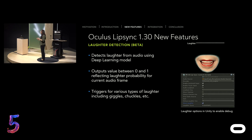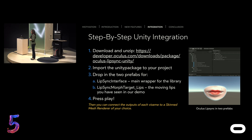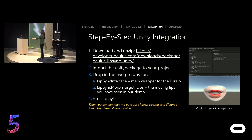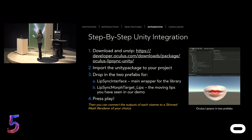At the end of my talk, me and my team will walk around and get you started on the Unity integration. We have chosen Unity because it's the most mature integration, and very soon you'll get access to all the packages online on the website. The package installation is quite easy: download and unzip, create a project, then import the Unity package we provide. Drop in two prefabs — the Lip Sync Interface and Lip Sync Morph Target — then press play, and you'll get the animation. In the end, you can connect the outputs of each viseme to a different mesh renderer of your choice.